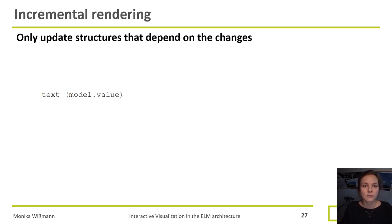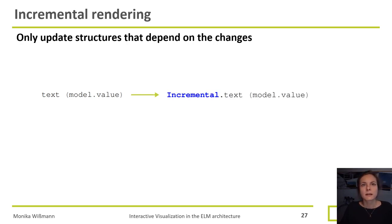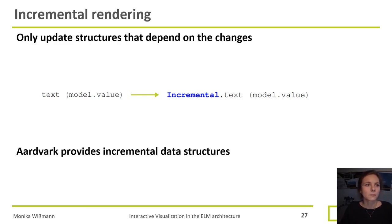This is where incremental rendering comes to the rescue. Incremental rendering means: I just update the structures that depend on my changes. How do we achieve this? Remember that Artwork provides implementations for incremental structures. In our example, the only thing we have to do is change our text to an incremental text. Now every time our model value changes, the view knows that only this field has to be updated and the rest can stay the same, avoiding a lot of calculation overhead. Artwork provides this not only for simple fields like text but also for data structures like lists and maps — the structures I mostly used in my ranking view implementation.